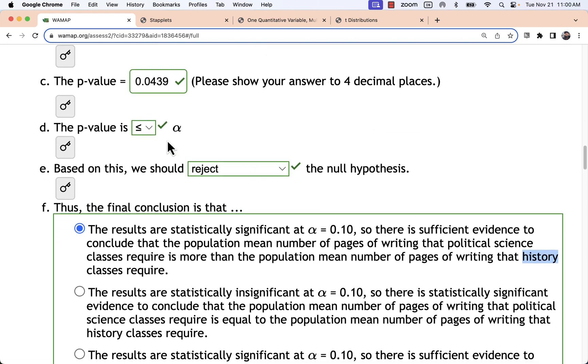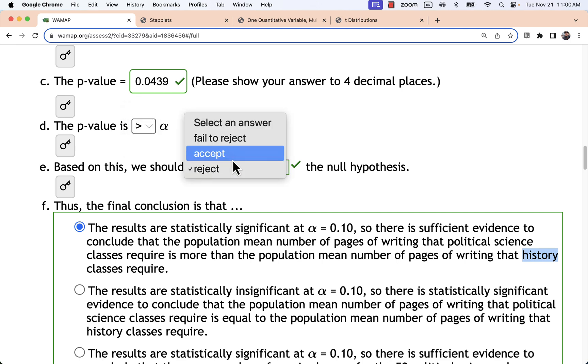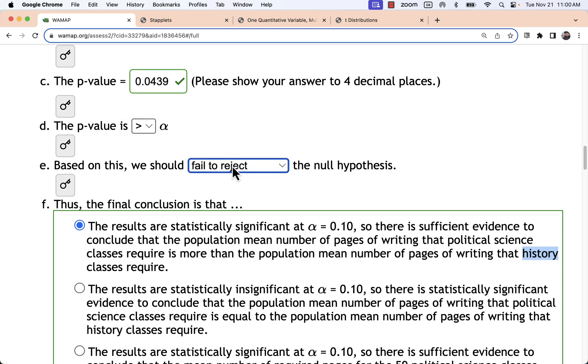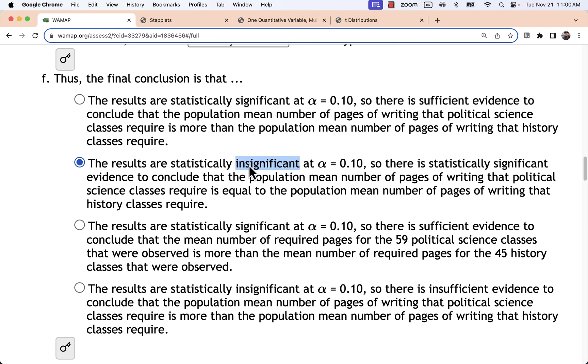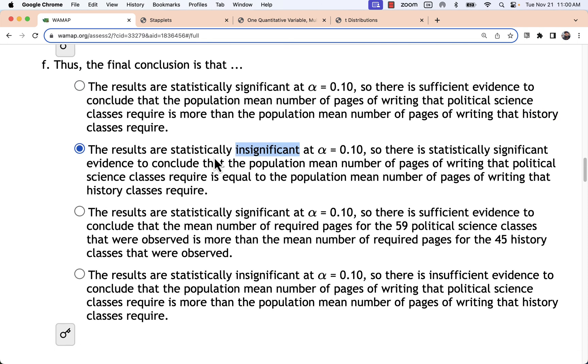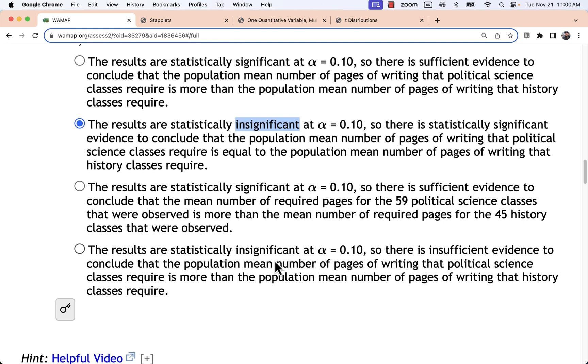The only thing that might be different is if you have a big p-value, bigger than your alpha or a smaller alpha, such that this is a greater than sign, then you would switch your decision to fail to reject. And you would have insignificant results and insufficient evidence. So that would be all the way down here. And specifically, population mean more than population mean. Now, there's one that talks about just the mean number of pages in the sample. And that's not what we're talking about at all.